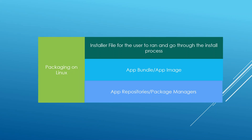We're not going to go through package managers in this course because that is still considered difficult for many users. I really like the AppImage option, which gives us one file the user can double-click to directly open the application. You can also use installers on Linux if you want. On Mac you can do similar things — use installers, app bundles, or package managers — since Mac is based on Unix.